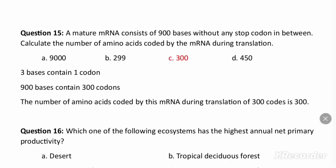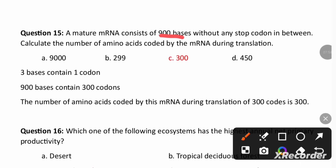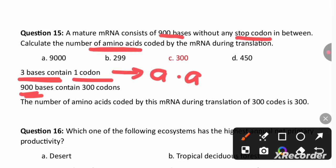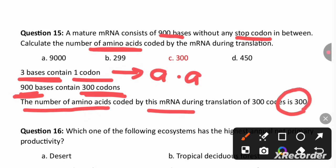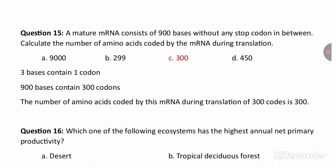A mature mRNA consists of 900 bases without any stop codon. We know three bases form one genetic codon, and each codon codes for one amino acid. With 900 bases we get 300 codons, so the mRNA codes for 300 amino acids. Since there are no terminator codons in between, the answer is 300 amino acids.